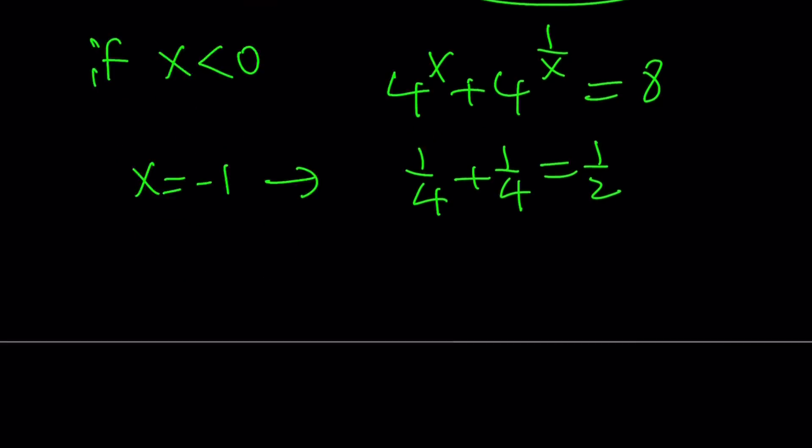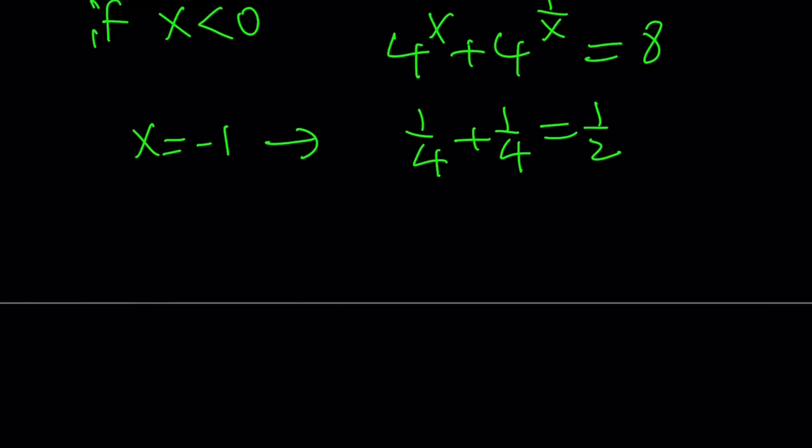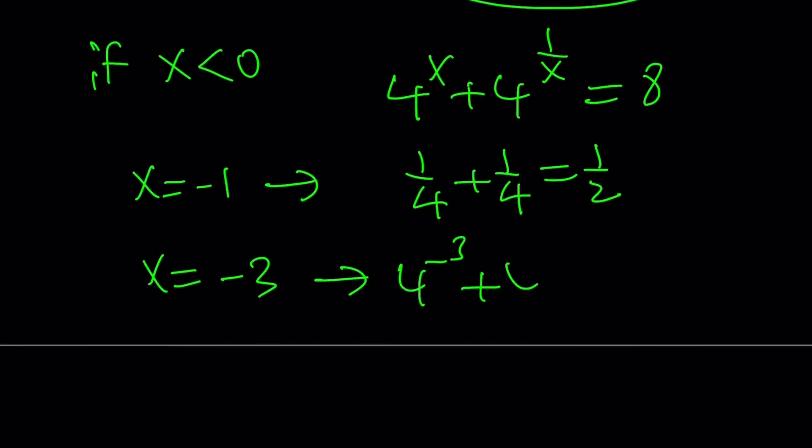That's definitely much less than 8. Well, if we use smaller or negatively larger values like x equals negative 3, is that going to matter? Is that going to change anything? Well, we have 4 to the power of negative 3 plus 4 to the power of negative 1 third. Now this is like 1 over 64, very small number. And this is going to be like 1 over cube root of 4. If you think about it, cube root of 4 is greater than, a little greater than 1, but less than 2. So it's like 1 point maybe 2, something like that. And 1 over that is going to be less than 1. 1 over 64 is way less than 1. Their sum is going to be small. Definitely less than 8. So what is going on here? With negative values, we're not really getting anywhere.